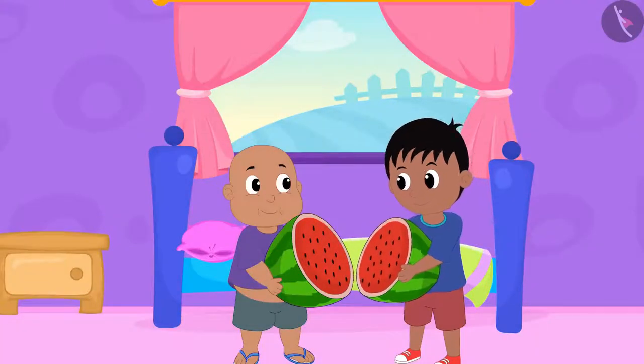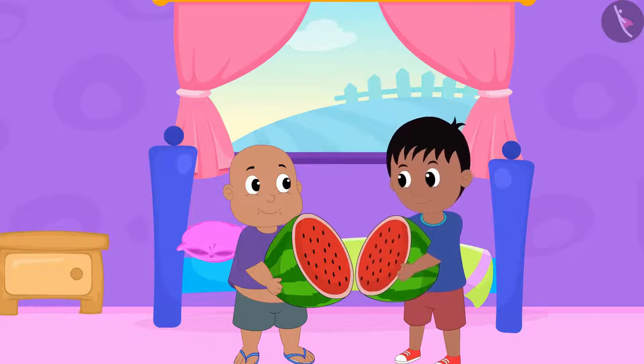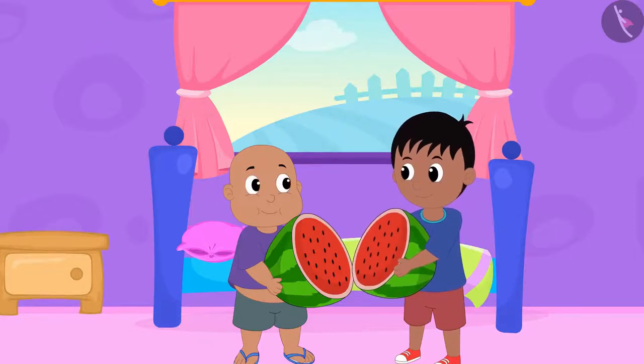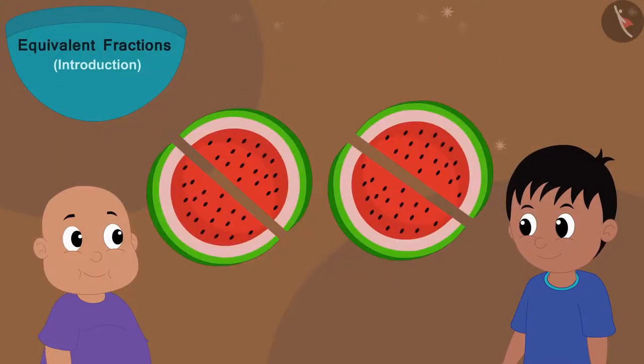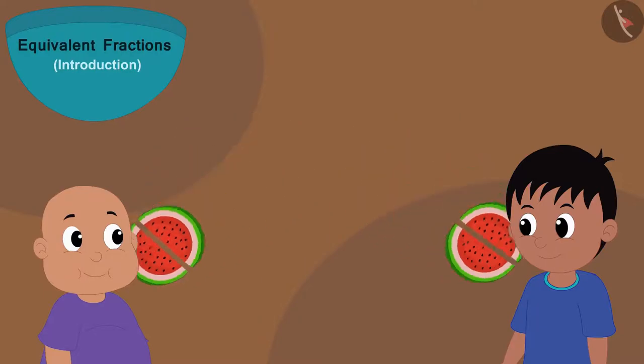Raju told Bablu that this portion is too big and he cannot eat it. So Raju cut those two big pieces into two equal parts. In this way, now the watermelon has four equal parts. Bablu gave two parts of them to Raju.